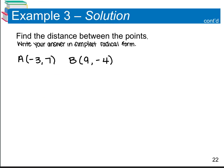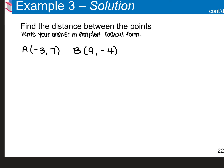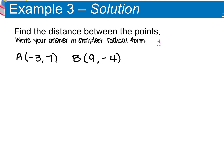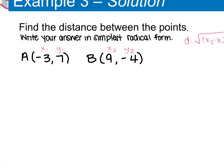For the next example, find the distance between (−3, 7) and (9, −4), writing your answer in simplest radical form. Your distance formula is the square root of (x₂ − x₁)² + (y₂ − y₁)². Using (−3, 7) as x₁, y₁ and (9, −4) as x₂, y₂: distance equals the square root of (9 − (−3))² + (−4 − 7)².